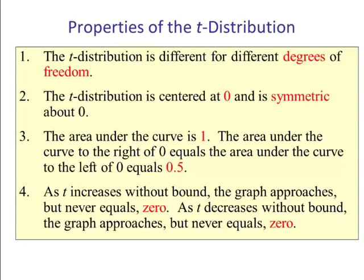Number two: The t distribution is centered at zero and is symmetric about zero, just like with the z. Number three: The area under the curve is one. The area to the right of zero equals the area to the left of zero, which is one half, or point five.